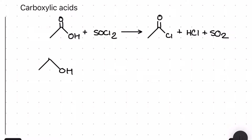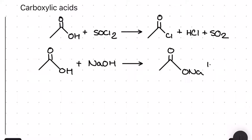This next one isn't strictly one of the aliphatic pathway reactions but it's important to show more than one way to make a carboxylate salt. Here I'm taking ethanoic acid and reacting it with sodium hydroxide to make sodium ethanoate, our carboxylate salt. There's another way to make one of these when we get to esters shortly.